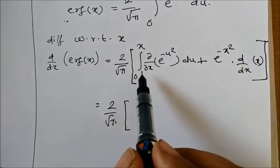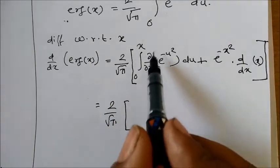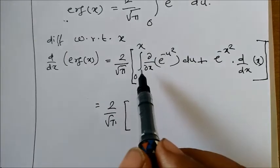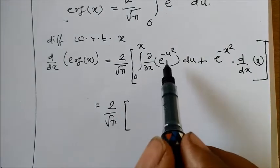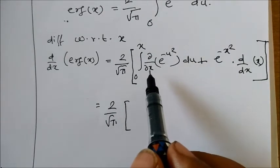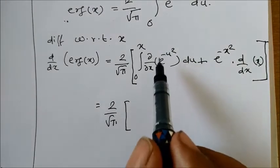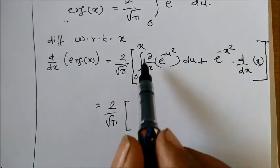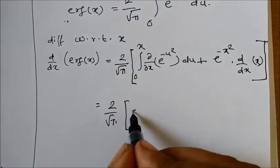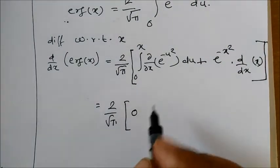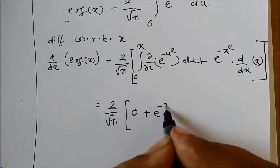times - now if you look at this differentiation under the integration sign, this is ∂/∂x of e^(-u²). We are differentiating with respect to x, so this becomes a constant and therefore this is 0, and hence this integration will be 0, plus e^(-x²)